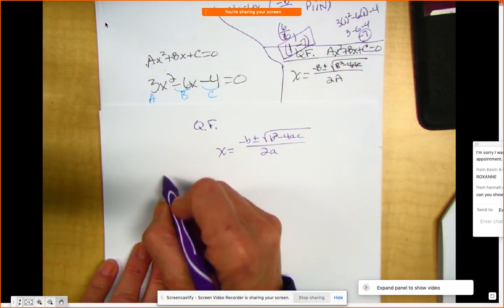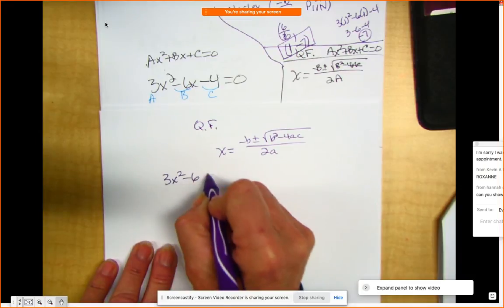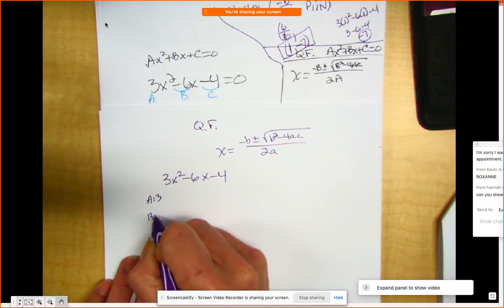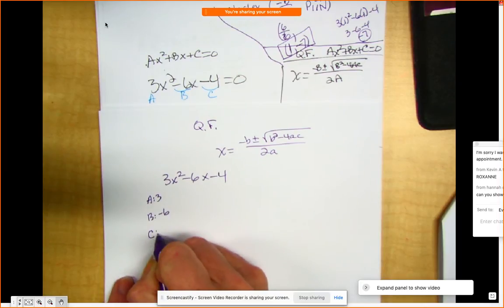This is 3x squared minus 6x minus 4, so my a is 3, my b is negative 6, my c is negative 4.